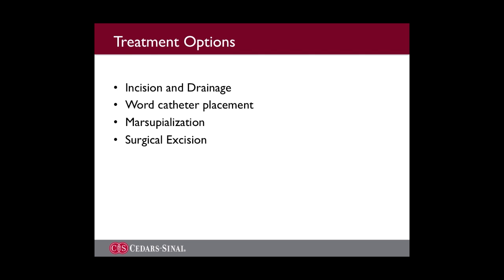Treatment is indicated in the setting of a symptomatic cyst, or if the cyst has evolved into an abscess, since unless spontaneous rupture has occurred, an abscess rarely resolves on its own. Incision and drainage is a relatively quick and easy procedure that provides almost immediate relief to the patient. This is discouraged, however, because there is a high likelihood that the cyst will recur, with a failure rate for I&D of about 13%.